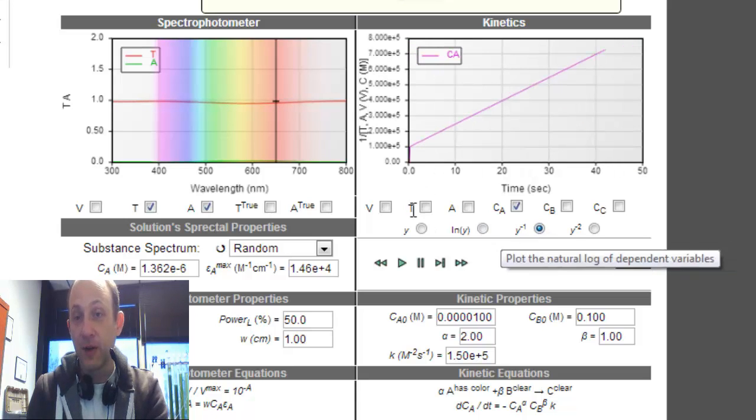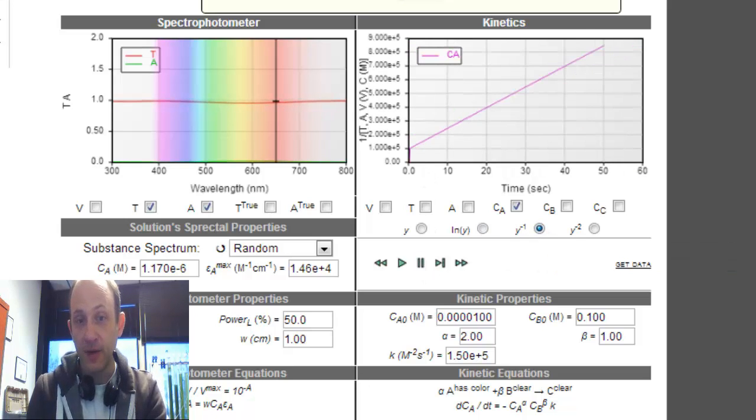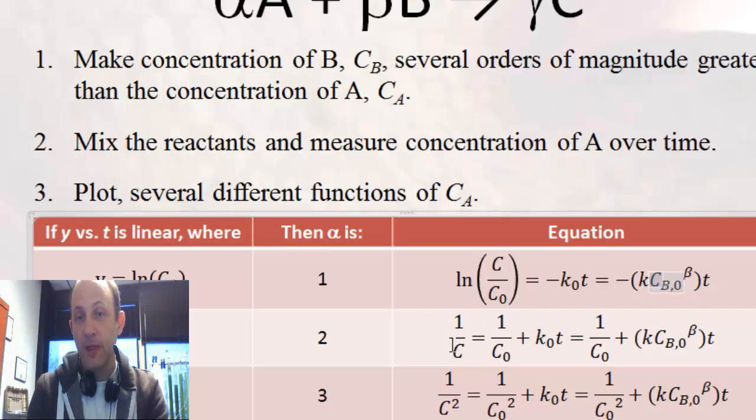However, if I plot 1 over concentration, it is. That is because, if I go back to here, this equation is what governs the pseudo second order reaction with beta, with B in excess.